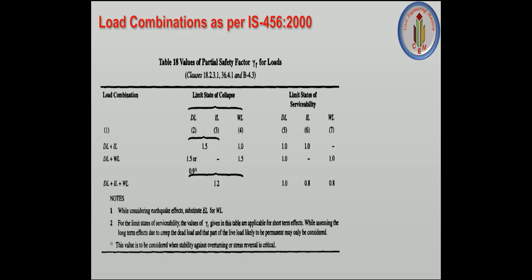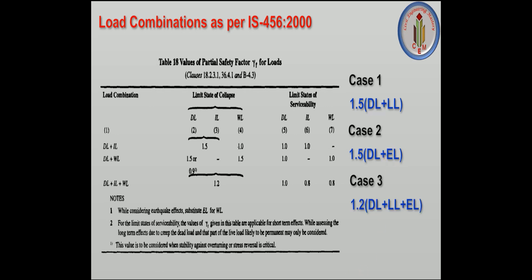Now let's look at the load combinations and partial safety factors as per IS 456:2000. Case 1 is Dead Load plus Live Load (imposed load), with a partial safety factor of 1.5. Case 2 is 1.5 times Dead Load plus Earthquake Load (or Wind Load). Case 3 is 1.2 times Dead Load plus Live Load plus Earthquake Load. Case 4 is 0.9 times Dead Load plus 1.5 times Earthquake Load.